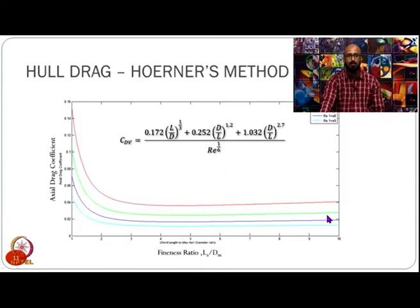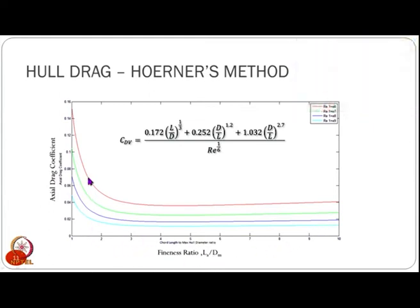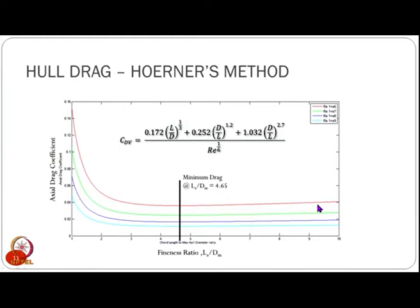When we plot the axial drag coefficient against fineness ratio, the different colored lines represent different Reynolds numbers. From the plot, around a fineness ratio of 3.5 the axial drag coefficient more or less remains constant. However, the minimum drag coefficient occurs at L/D of 4.65 — at that fineness ratio we get the lowest drag coefficient across all Reynolds numbers.